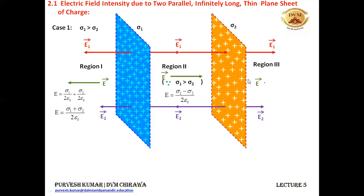In region 3, similar to region 1, the net electric field is directed to the right of the orange colored sheet and equals E1 plus E2, that is sigma 1 upon 2 epsilon naught plus sigma 2 upon 2 epsilon naught, giving (sigma 1 plus sigma 2) upon 2 epsilon naught.